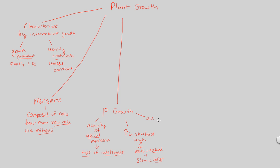Primary growth is important because it actually happens in all plants — it's a basic mechanism that all plants undergo. But something more advanced and more developed is secondary growth. Secondary growth is no longer in the apical meristems; we're going to shift gears and look at a different meristem — the lateral meristems.